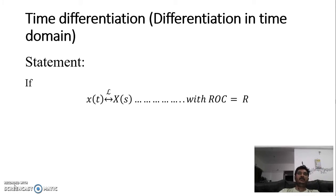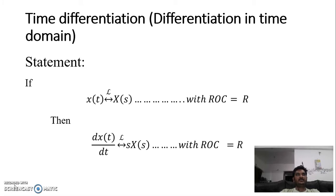transform of X(t) with ROC = R, then differentiating X(t), that is dx(t)/dt, the Laplace transform of this will be sX(s) with ROC equal to R.